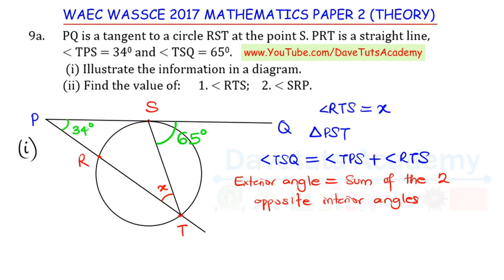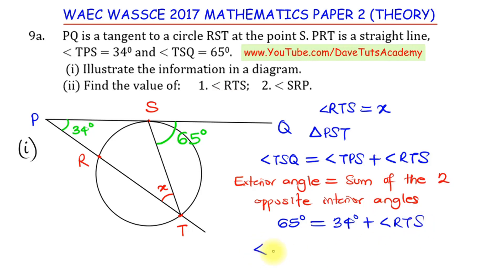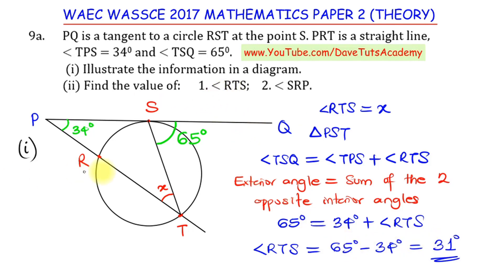Setting up the equation: angle TSQ equals angle TPS plus angle RTS, so 65 degrees equals 34 degrees plus angle RTS. Therefore angle RTS equals 65 minus 34, which is 31 degrees. We can label this on the diagram as 31 degrees — that is the solution to the first part of the question.